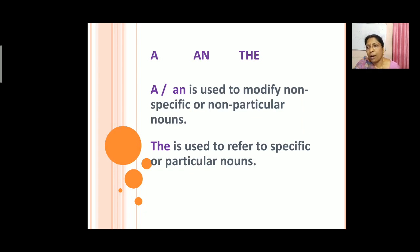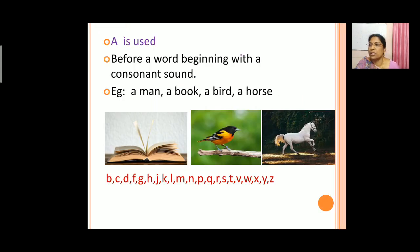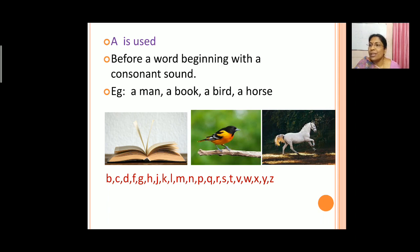Now let us learn more about 'a'. 'A' is used before a word beginning with a consonant sound. So 'a' is used before a word which begins with a consonant sound. For example: a man, a book, a bird, a horse. So 'a' is used before words which have a consonant sound.